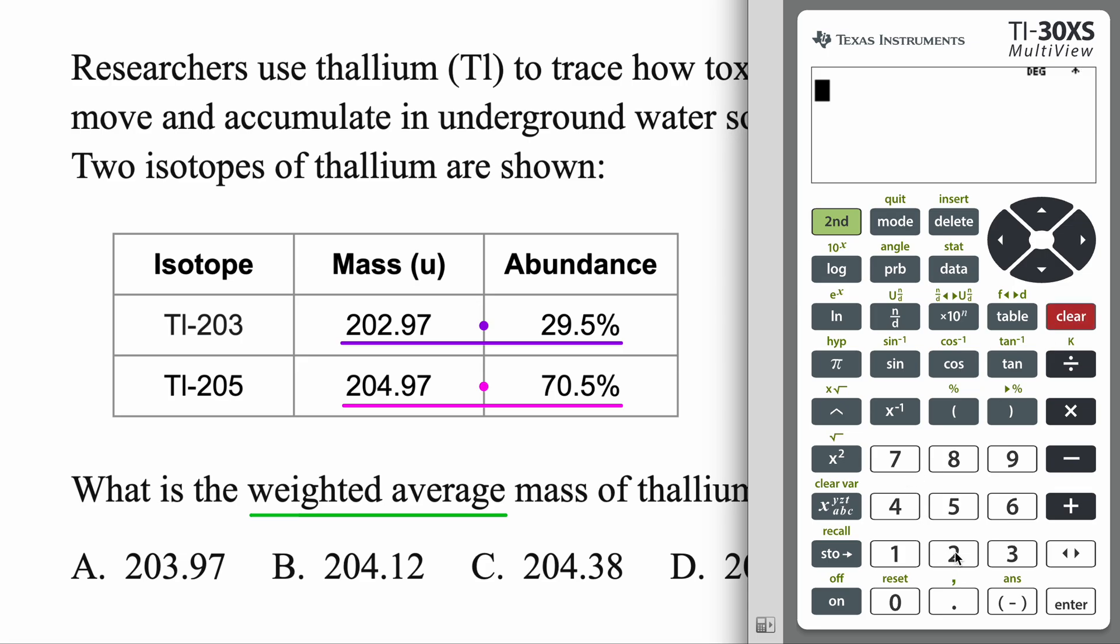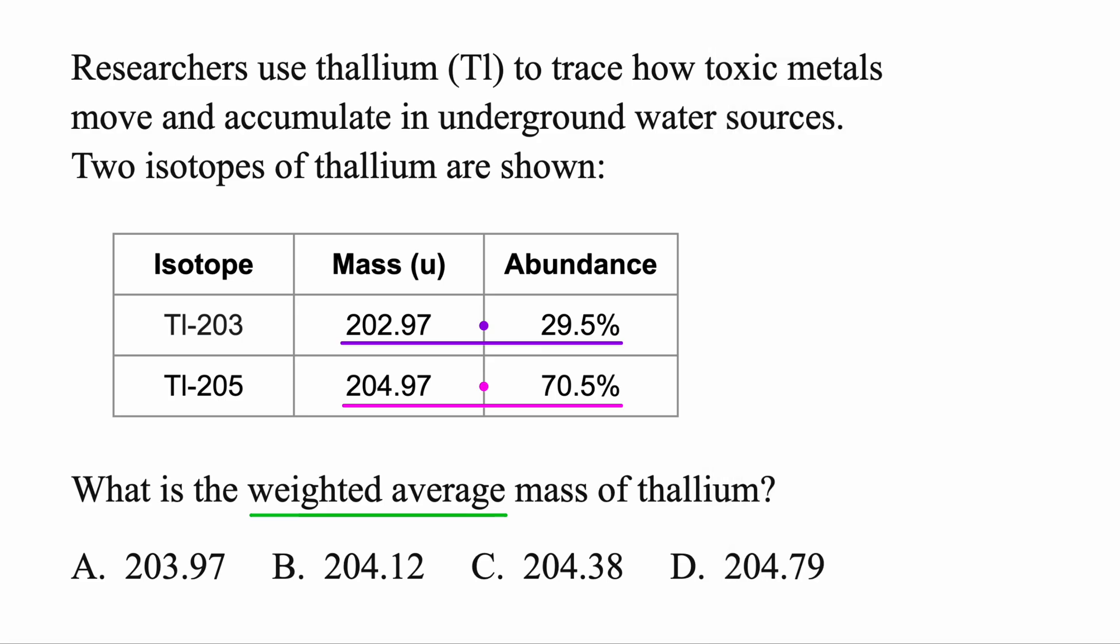Okay, let's clear. Let's do 202.97. That mass shows up 29.5% of the time. And plus 204.97. That mass shows up 70.5%. Looking good. And enter. 204.38. So see? That's the correct weighted average mass of thallium based on these two isotopes here.